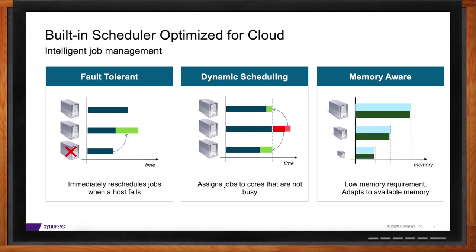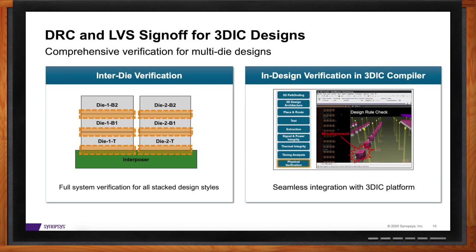3D IC has been around for a while, but has picked up significant momentum recently. The ever-growing need to add more logic, memory, and compute makes multi-die systems a compelling solution. Customers are doing different styles of multi-die designs — 2.5D and 3D layouts. From the ICV tool side, we can do full system verification for all those design styles: inter-die DRC, inter-die LVS, and full system sign-off verification. ICV is also integrated within the 3D IC Compiler platform for in-design verification of 3D IC systems, making it a robust solution for 3D verification.